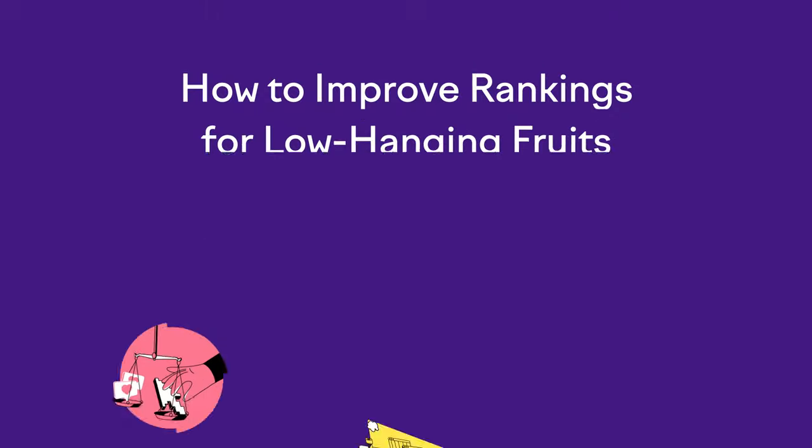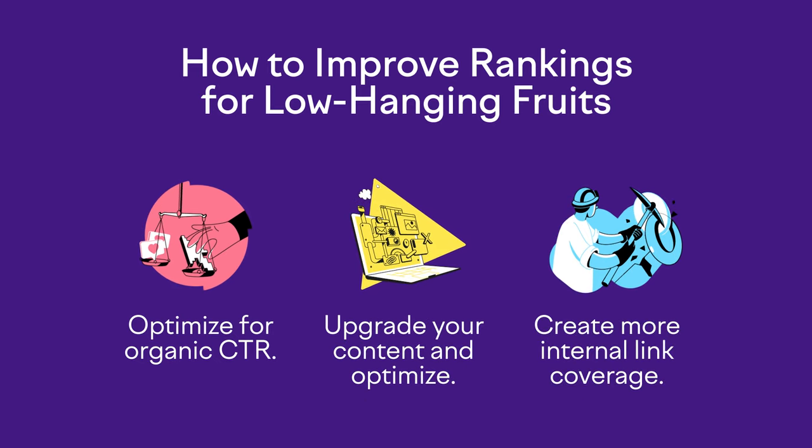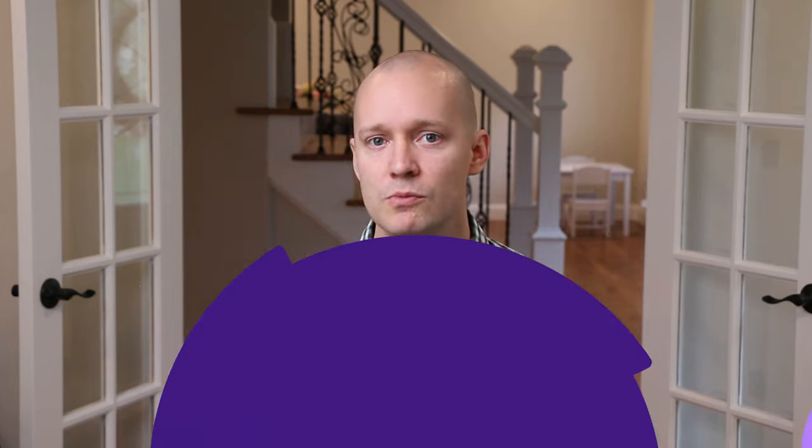The next method you can use to improve rankings for low-hanging fruits is, number three, create more internal link coverage. Find relevant pages on your website and build internal links to your target page. If you don't have relevant pages, then it's an indication that you don't have enough topical authority.